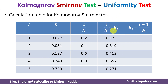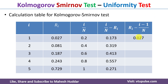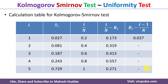Next, we calculate the value of Ri minus (i-1)/n. For the first case, Ri is 0.027 and i minus 1 divided by n is 1 minus 1 divided by 5, which is 0. So we get Ri as 0.027. For the next value, i is 2, so 2 minus 1 divided by 5 equals 1/5. So Ri is 0.081 minus 0.2, which gives a negative value. We do not consider negative values. The remaining values similarly come out negative, so we do not consider those either.